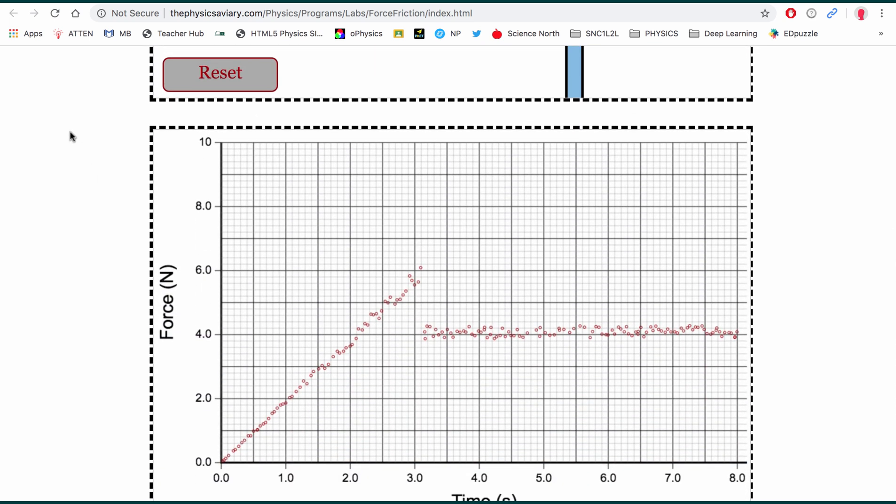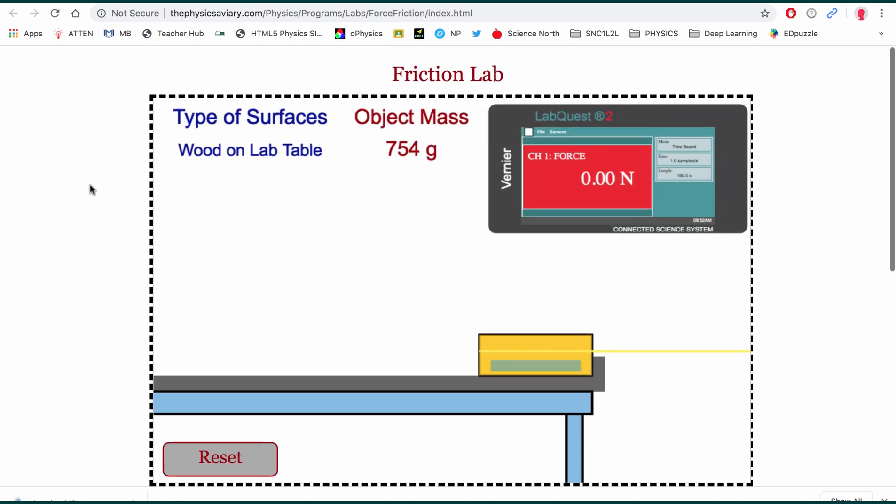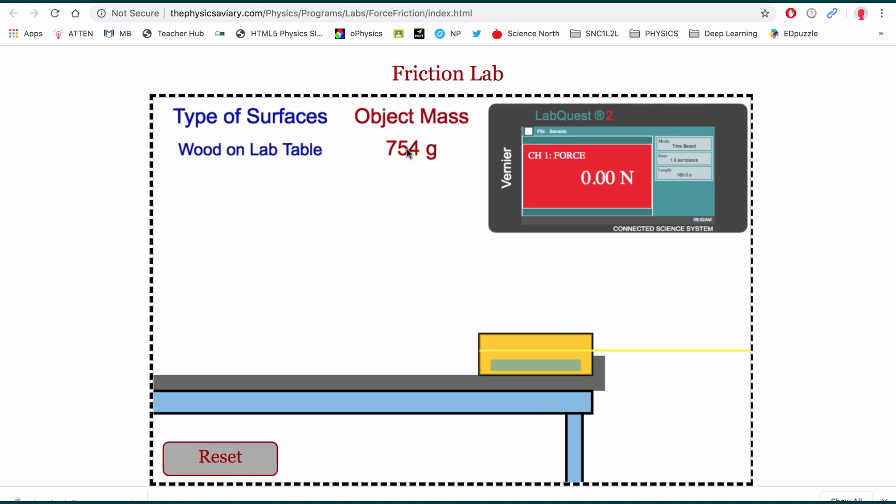And again it will go until we overcome static friction and the block moves in uniform motion. The shape is exactly the same as we've had in the past. Diagonal line, peak. This is your static friction. Drop off to kinetic friction. I'm now going to save this one. And we're going to make sure that we name it properly, which is wood on tabletop, 754 grams.